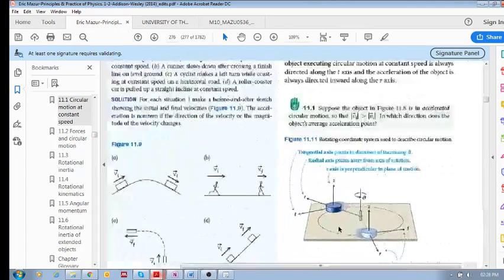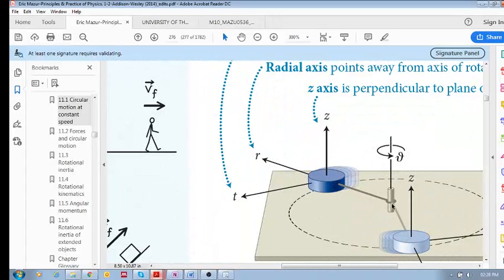The radial axis is this axis over here from the axis of rotation through the particle.